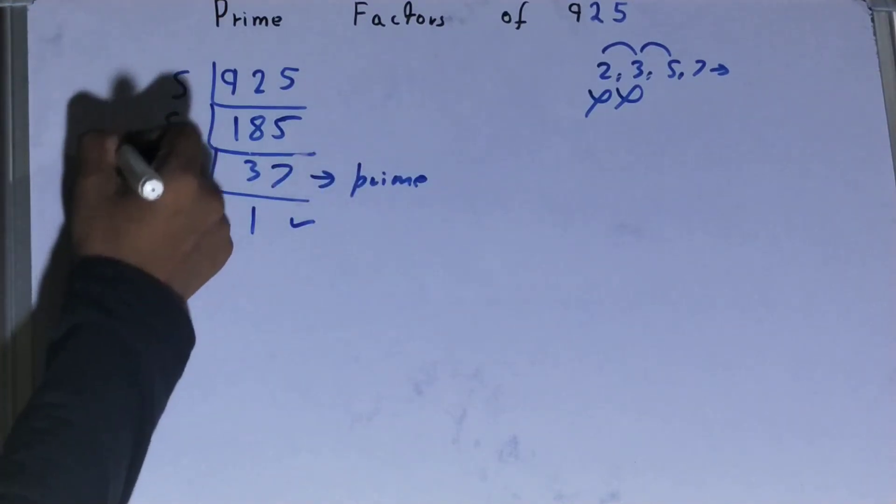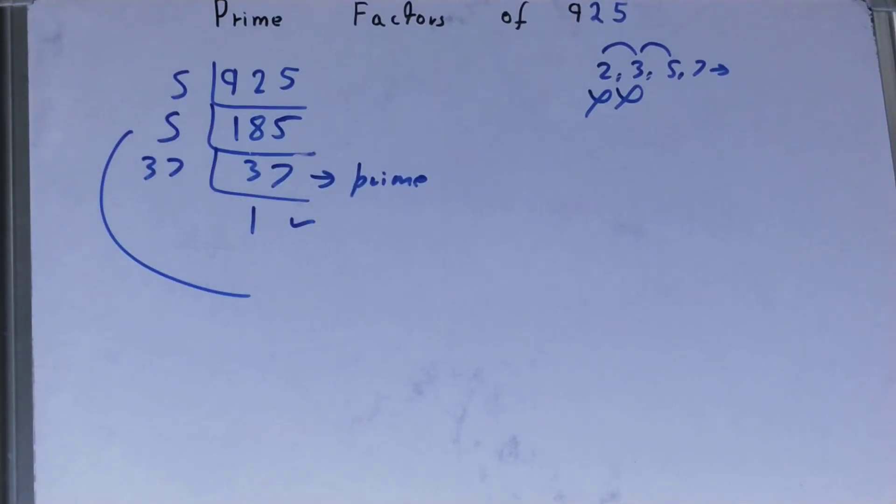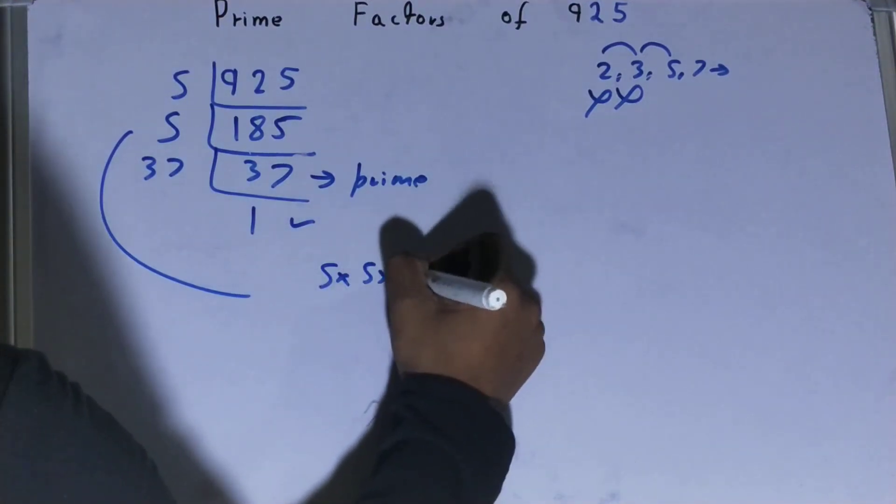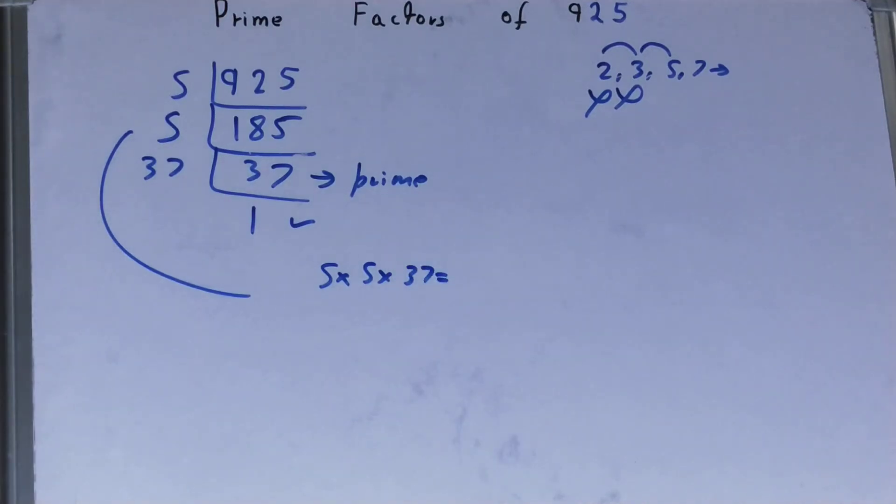...1, the work is done, and whatever you have on the left-hand side will be the set of prime factors for the number 925. That is 5 × 5 × 37. Now, if you want to check...